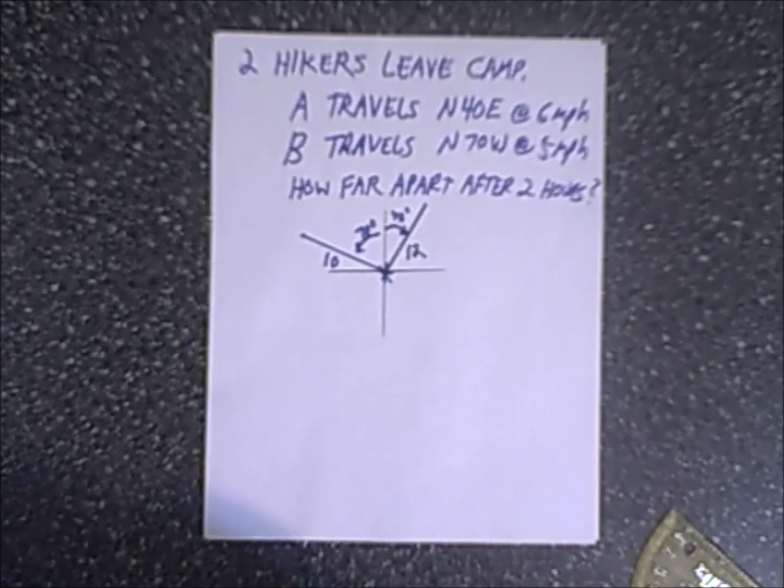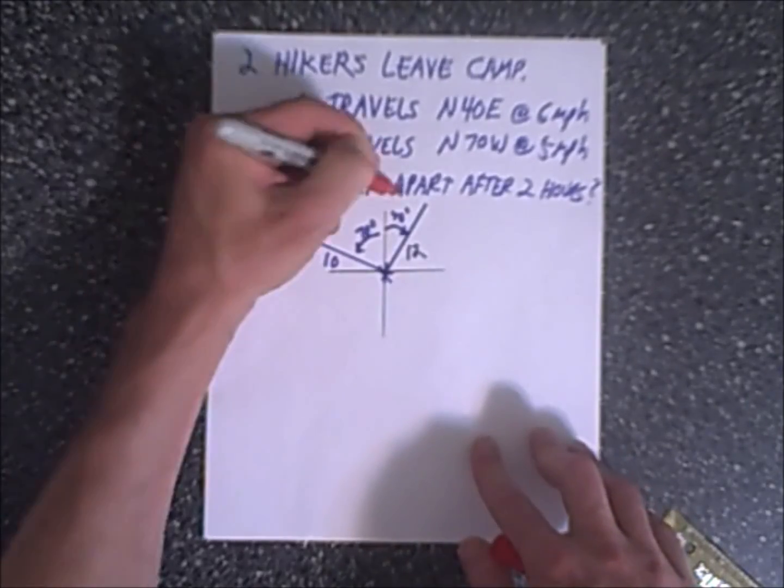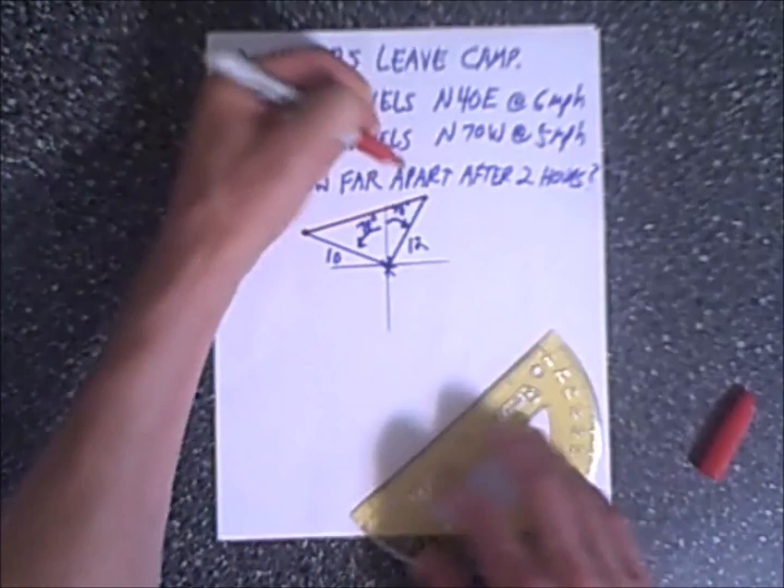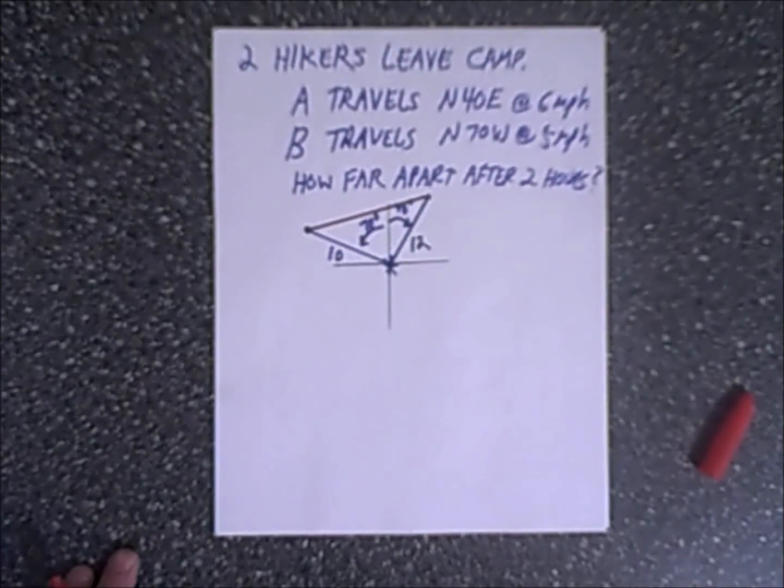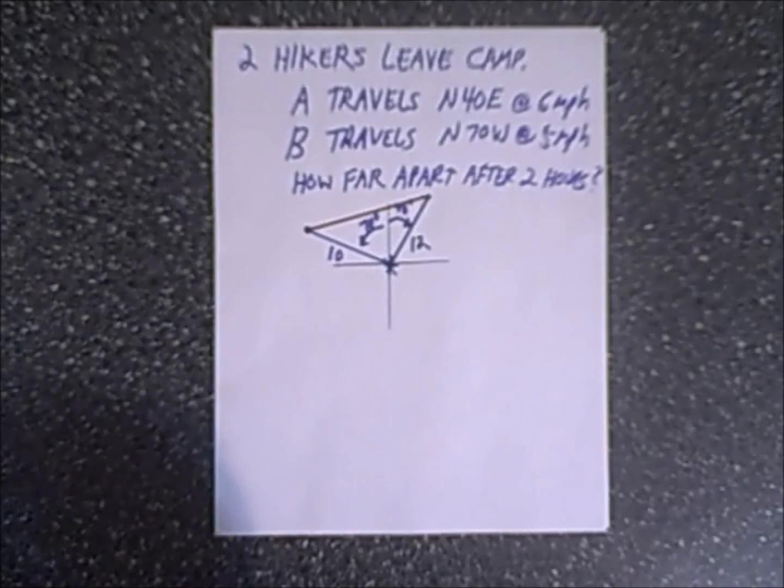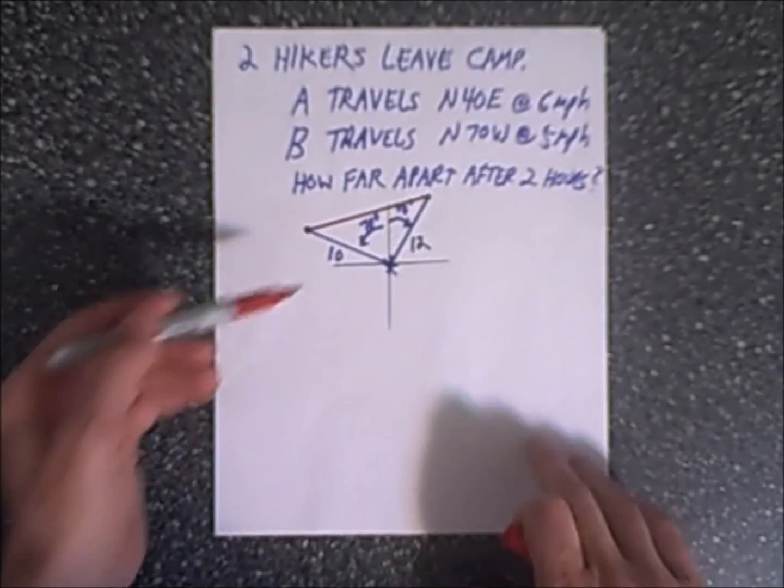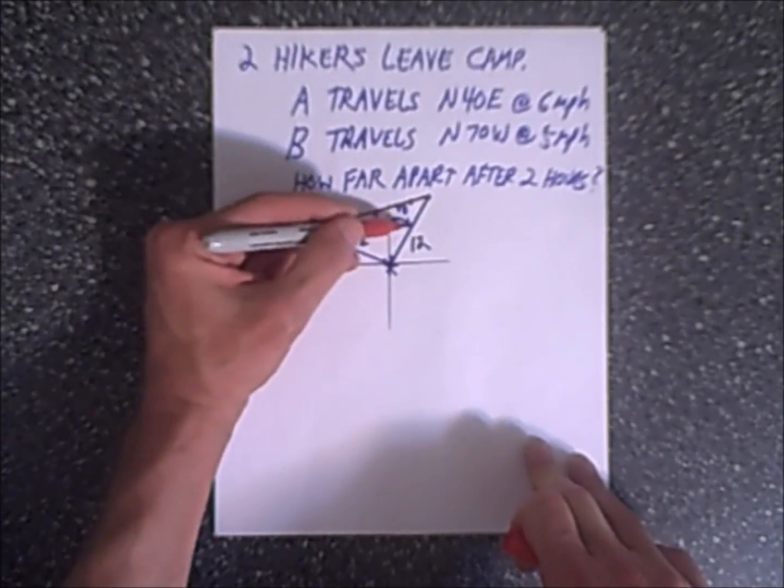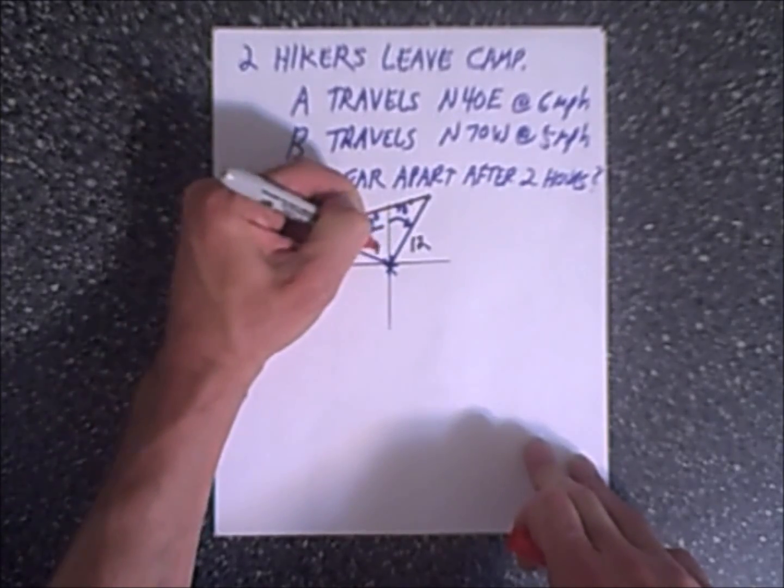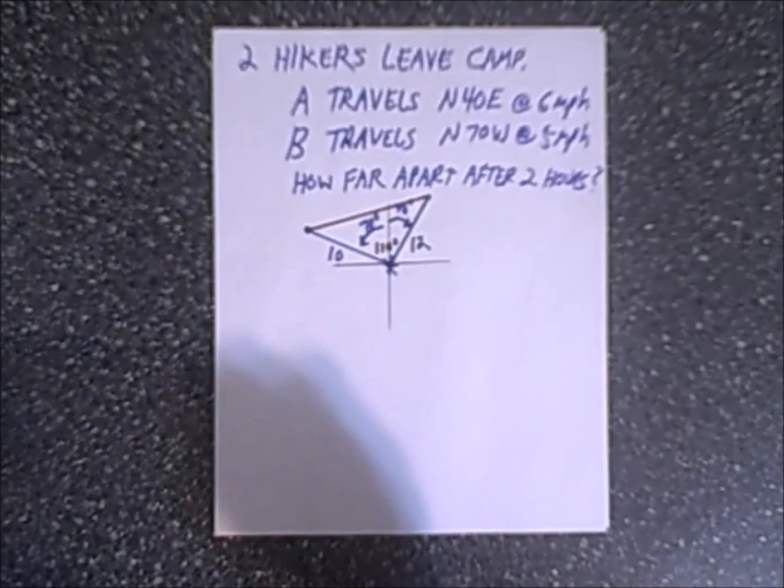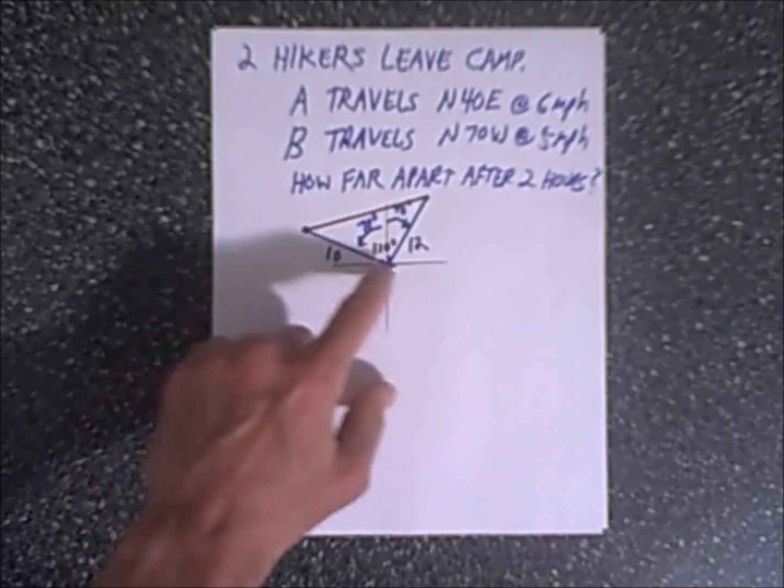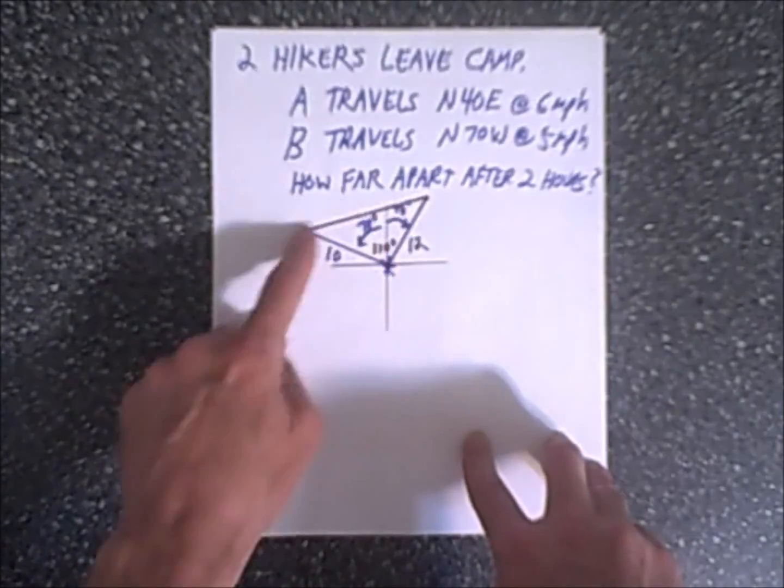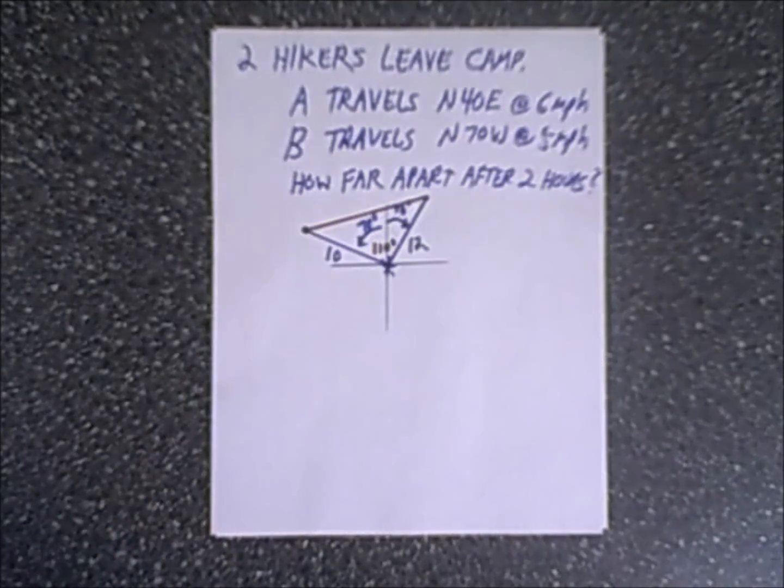For you geometry people, you of course recognize that this is 20 degrees here and 50 degrees here. But nevertheless what we're looking for is the distance between B and A which is this straight line. And you can see we have a triangle. So if you are in trigonometry, you can recognize that this looks very similar to solving triangles where you are given two sides and the included angle. The included angle in this case is 70 degrees plus 40 degrees. Therefore the included angle is 110 degrees.